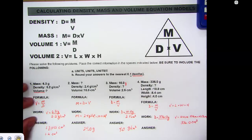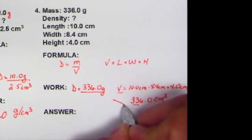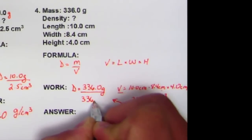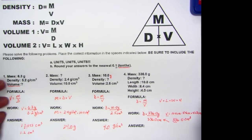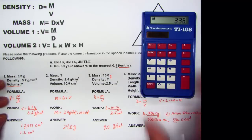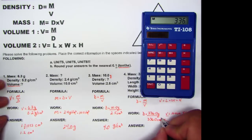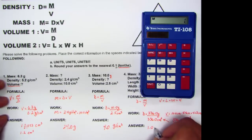Once we have volume, plug it in. We have 336 grams divided by 336 cubic centimeters. The units can't cancel, so the unit is grams per cubic centimeter. This equals a density of 1.0 grams per cubic centimeter. That's how you solve your basic density, mass, and volume equations.